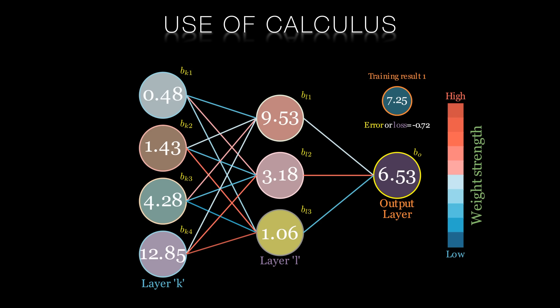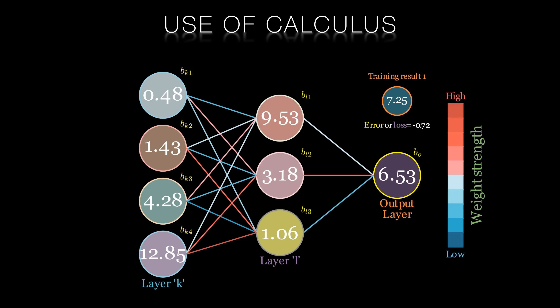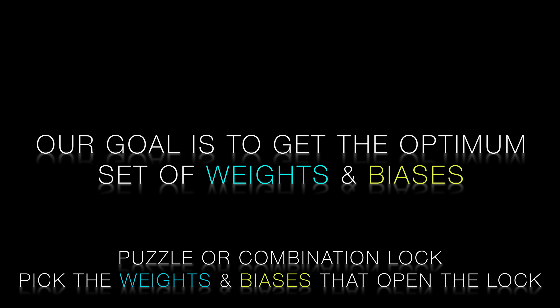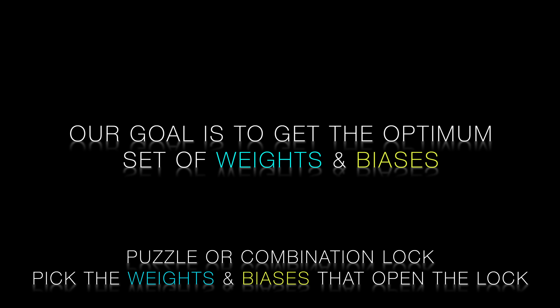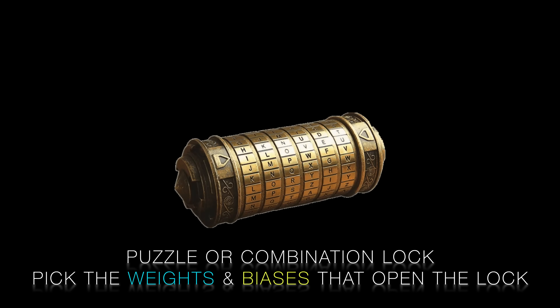In this video we'll see how we use calculus to determine the sensitivity of our cost function to every single weight and every single bias in the network. Then we'll use those sensitivities to calculate optimal tweaks and nudges that will, over the course of many many epochs, get the network to perform the way we want it to.